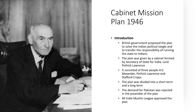Starting with a brief introduction: the Cabinet Mission Plan was an effort by the British government to transfer the responsibility of running the state of India to Indians. The plan was given by a cabinet formed by the Secretary of State for India, Lord Patrick Lawrence, and consisted of three people: A.V. Alexander, Patrick Lawrence, and Stafford Cripps. The plan was divided into two parts — a short-term plan and a long-term plan. Unfortunately, the demand for Pakistan was rejected in the preamble. Still, the All India Muslim League approved the plan, but Congress first accepted and then rejected it when it saw the Muslim League's reaction.